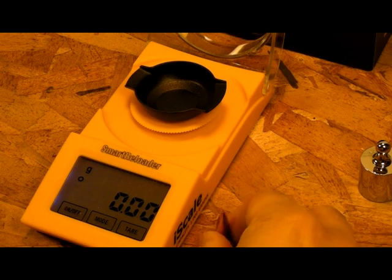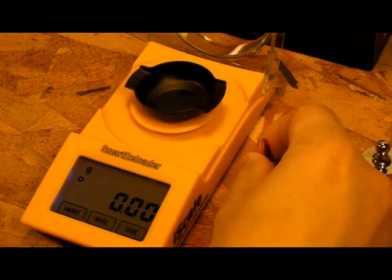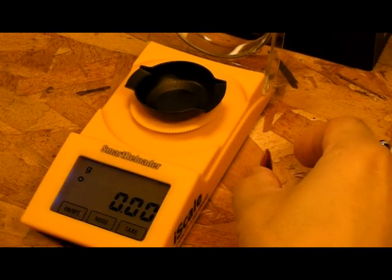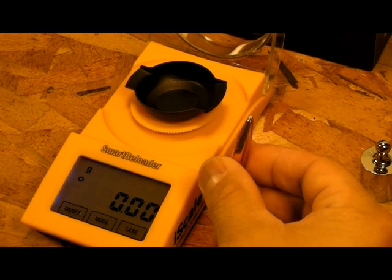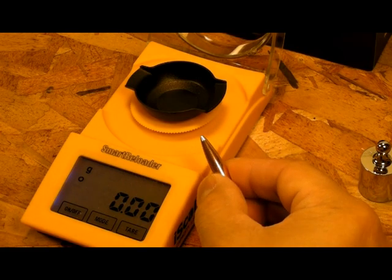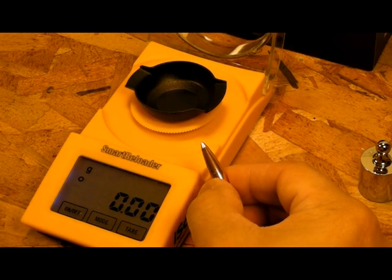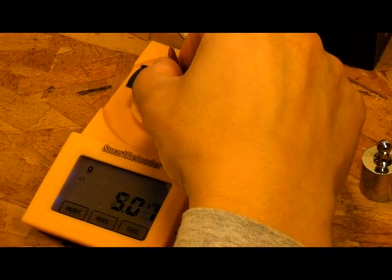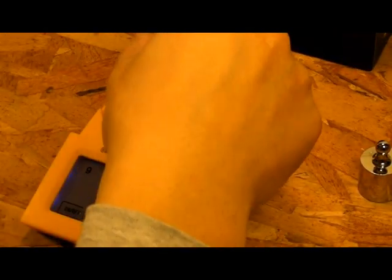Now for our test, I have a 139 grain Lapua Scenar 6.5 millimeter bullet. Now I notice - I don't know if you can see that - I've actually pointed the bullet and trimmed it to get them all uniform. We'll go ahead and weigh it.